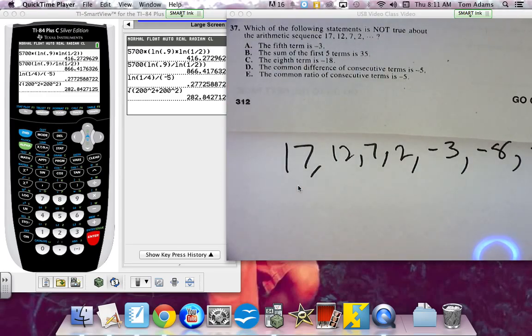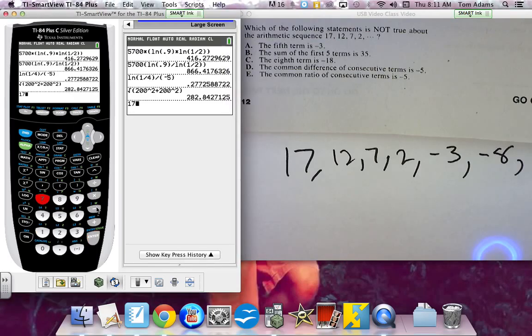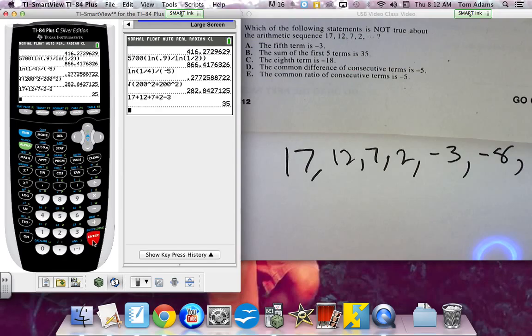The sum of the first five terms is 35. Oh boy, got to add them up. So I've got 17 plus 12 plus 7 plus 2 minus 3. No, first five terms is 35.